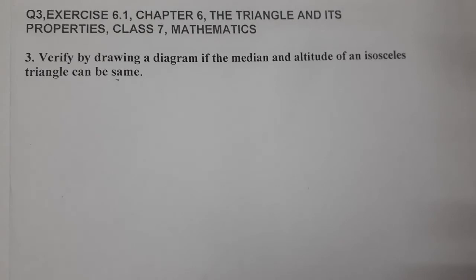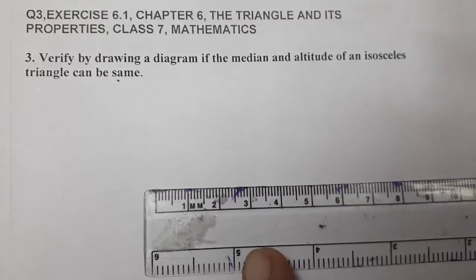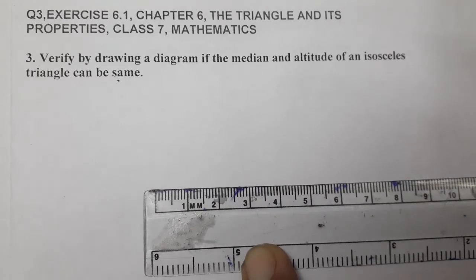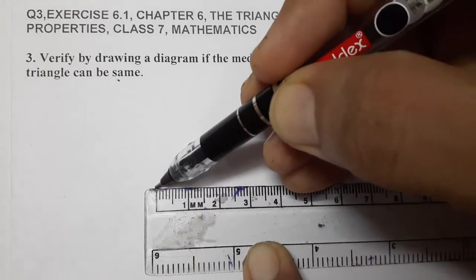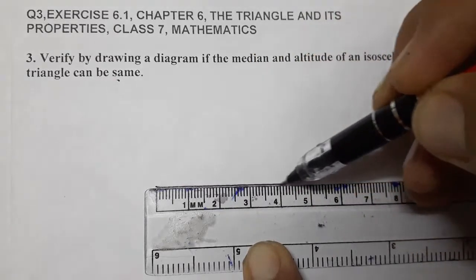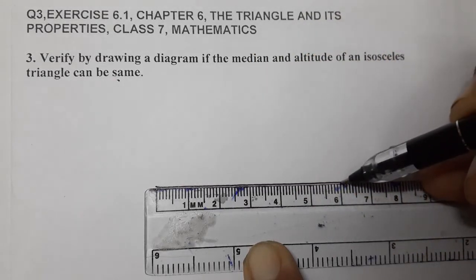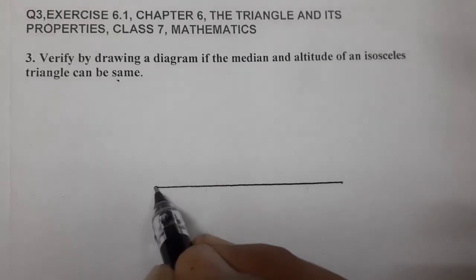So let's make one isosceles triangle of size 6-4-4. First of all, one side of 6 centimeters. We have to verify by actual diagram. First, 6 centimeters. We are making one isosceles triangle of size 6-4-4.